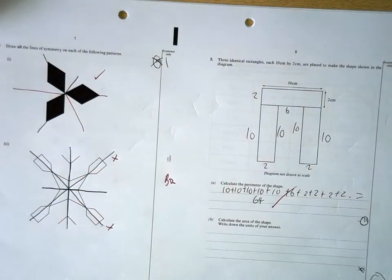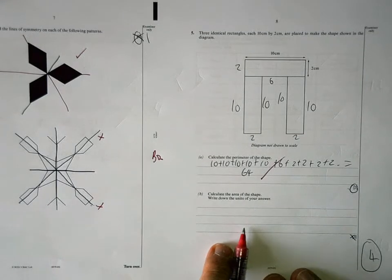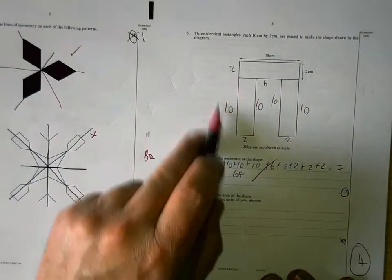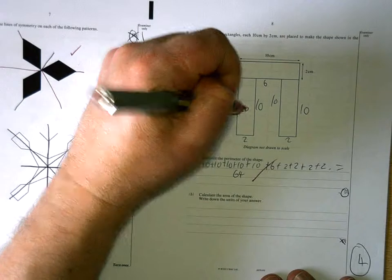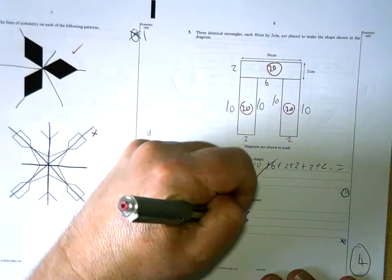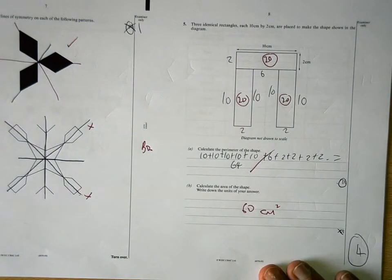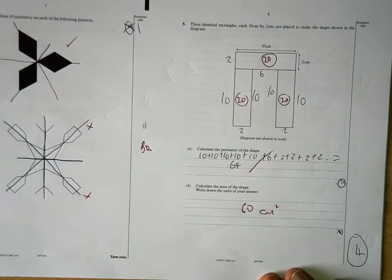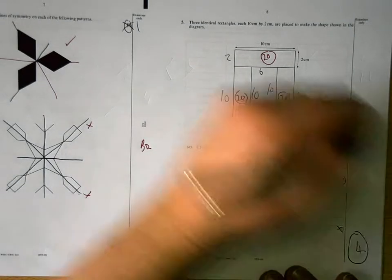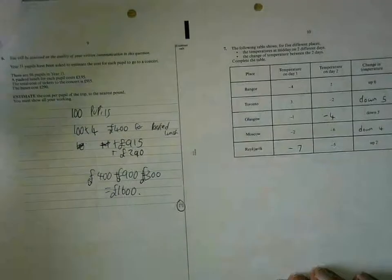The perimeter is 64. The area is something that we've been working on back in January. The area of one of those is 20, 10 times 2. So that's 20, that's 20 and that's 20. 60. And the units of area, centimetres squared. Those are three marks you shouldn't have lost. Three marks on that page.